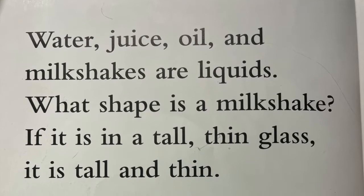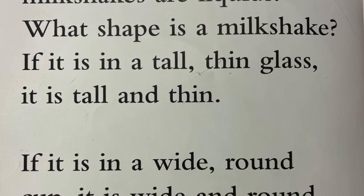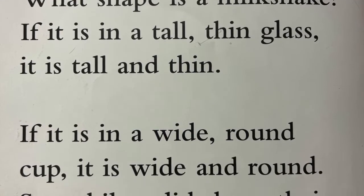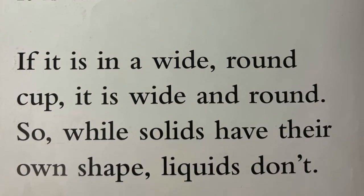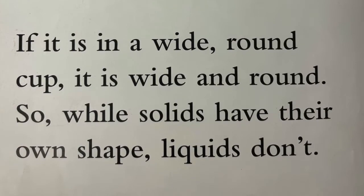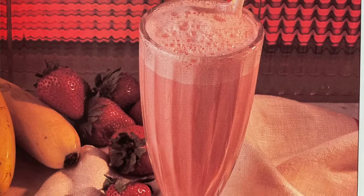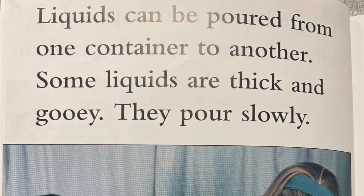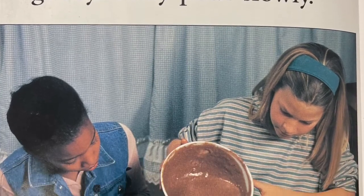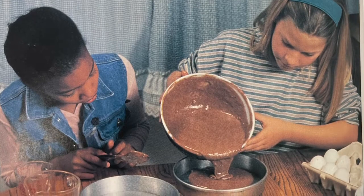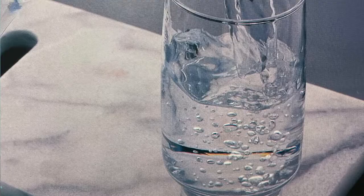Water, juice, oil, and milkshakes are liquids. What shape is a milkshake? If it's in a tall, thin glass, it is tall and thin. But if it is in a wide, round cup, it is wide and round. They take the shape of whatever container they are in. Liquids can be poured from one container to another. Some liquids are thick and gooey and pour slowly. Some liquids are thin and runny and pour quickly.